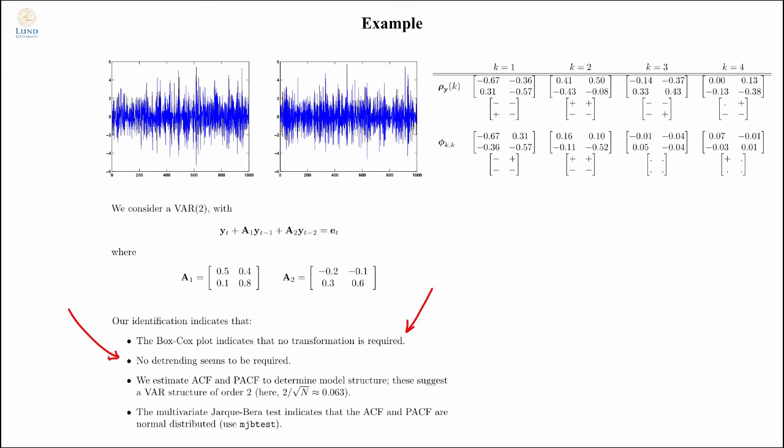I also check if I needed to detrend my data, but there's no need for that. I estimate the ACF and the PACF. They look like this. And 2 over square root of n is 0.063. That means that all my ACF seems to be significant, whereas if I look at the PACF, I can see that as soon as I pass model order 2, they turn to 0. So this seems to indicate an AR2.